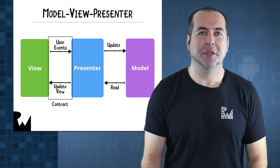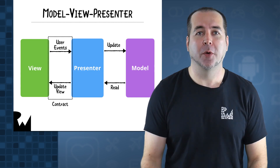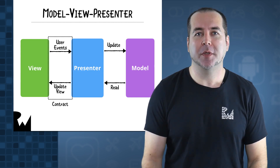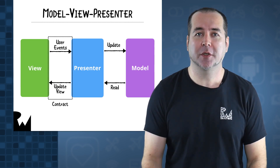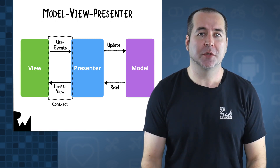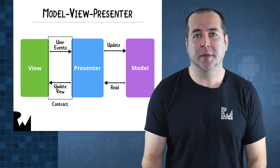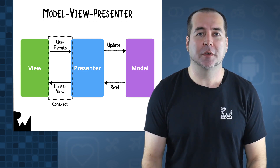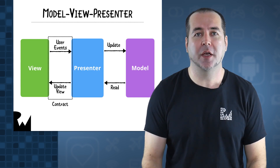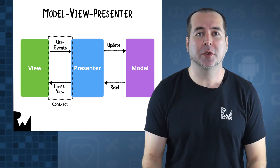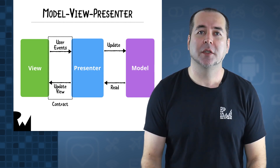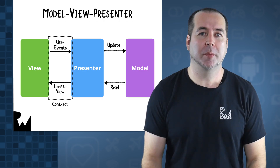One of those variations is model view presenter, or MVP. MVP handles the interaction between the view and presenter layers in a specific way. A common variation is to define a contract interface between the presenter and view. The view calls the presenter interface methods when user events occur, and the presenter calls view interface methods to tell the view what to display from the model.